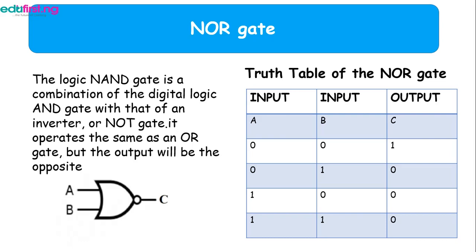The NOR gate is the combination of the OR gate and an inverter. It operates in a similar way — we take the OR truth table and invert the output. For the NOR gate, both inputs have to be on for the output to be on, or for it to be one.